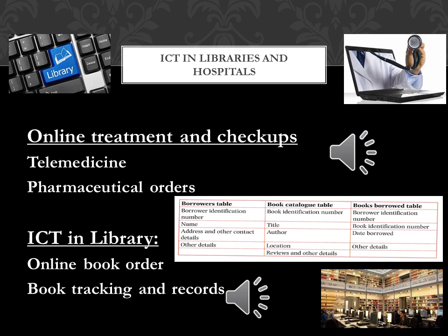Libraries often contain many thousands of books, magazines, CD-ROMs, etc. In fact, some of the largest libraries, for example the British Library in the UK, can contain well over 100 million books. That's a lot of things to keep track of. For this reason, libraries use computer-based systems to keep a record of their books and of the people who borrow the books.